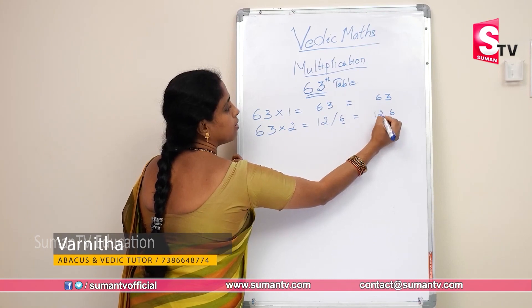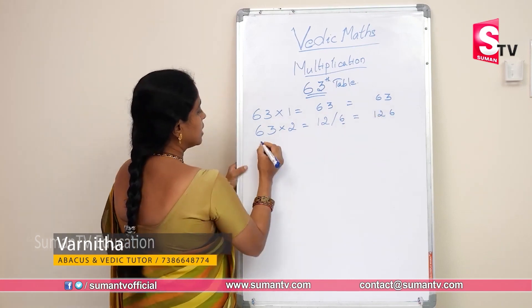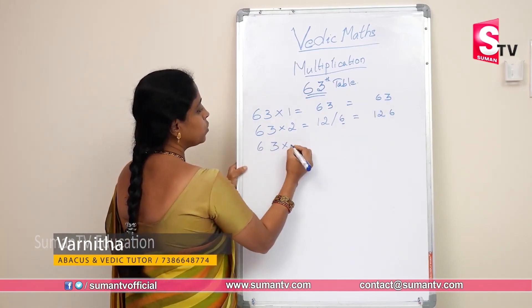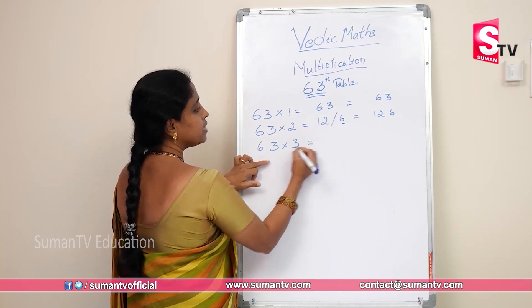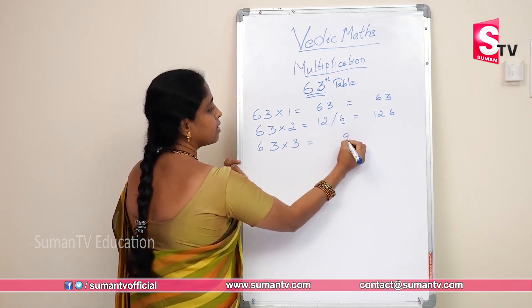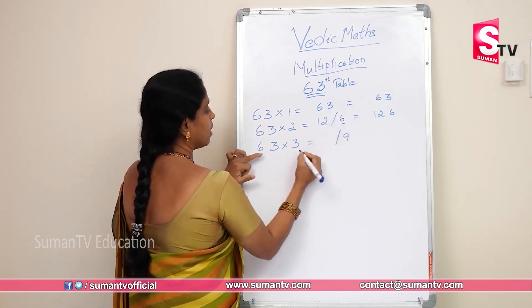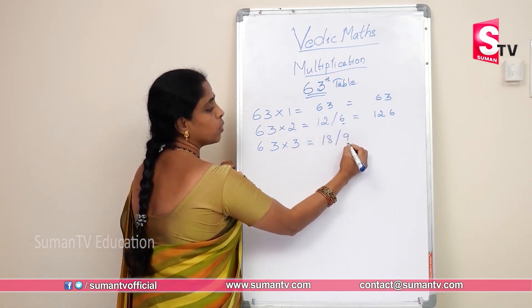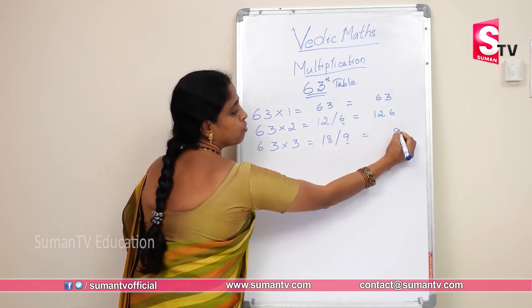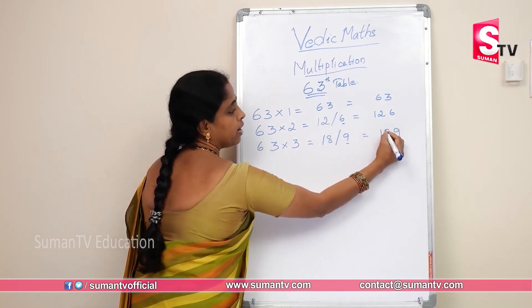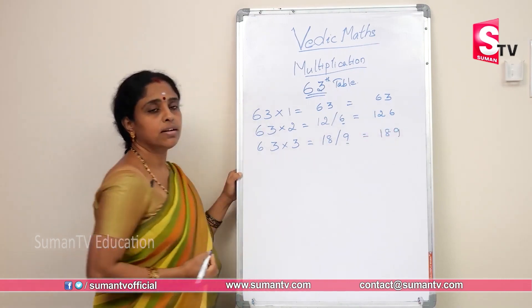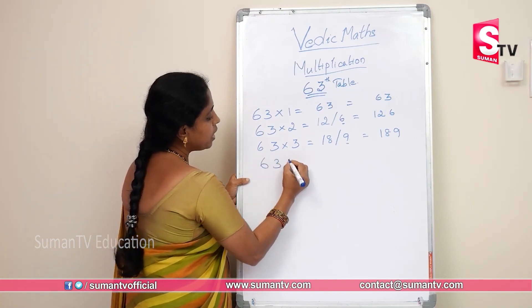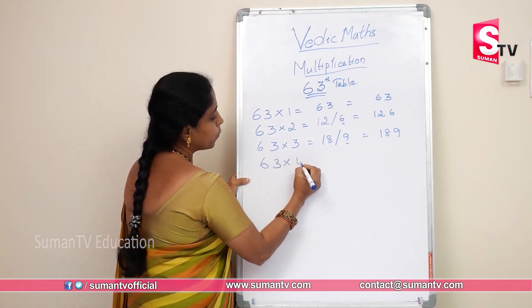63 × 3: three threes are 9, three sixes are 18. There is one digit to carry, so write it off. Result: 9 and 18 gives 189.